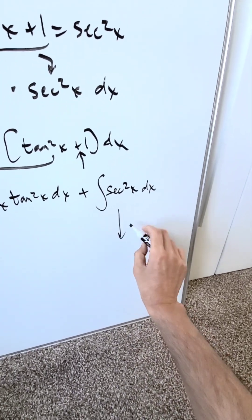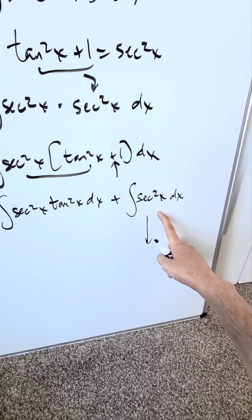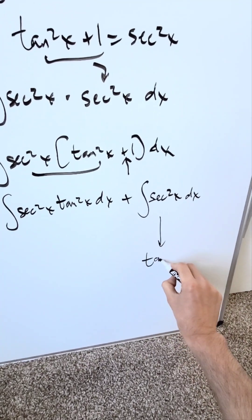The anti-derivative from here is easy. The derivative of tan x is secant squared x, therefore the anti-derivative from here is going to be tan x.